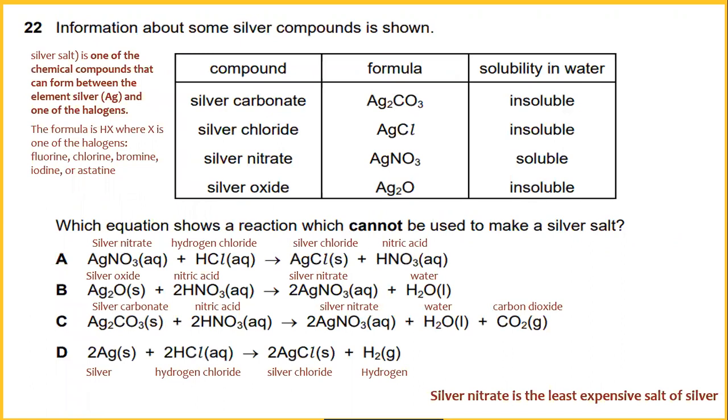Information about some silver compound is shown. We have here compound silver carbonate formula Ag2CO3 and solubility in water is insoluble. We have silver chloride AgCl and solubility in water is also insoluble. Compound like silver nitrate, the formula is AgNO3 and in terms of the solubility in water is soluble. And also we have silver oxide, formula is Ag2O and solubility in water is insoluble.